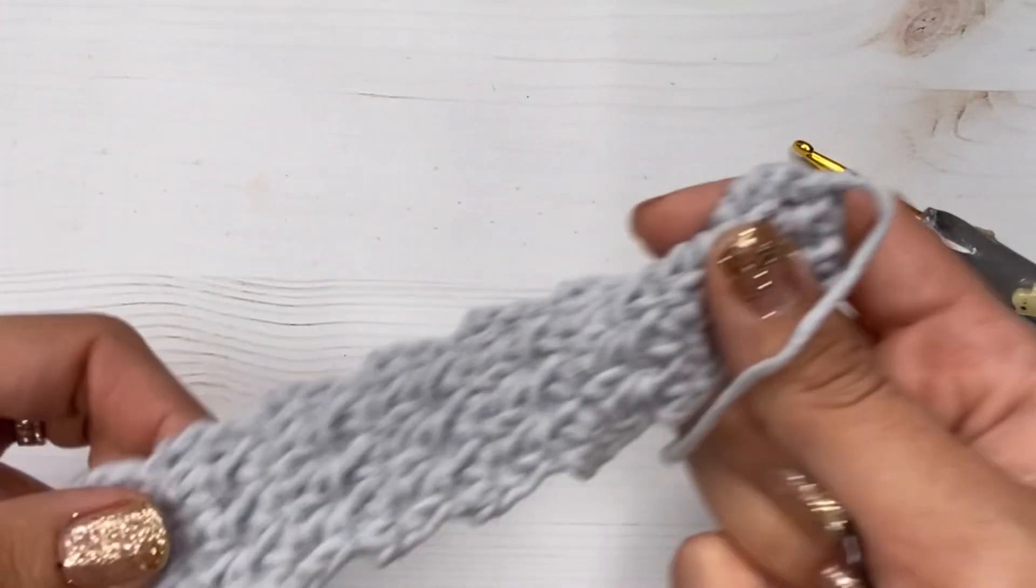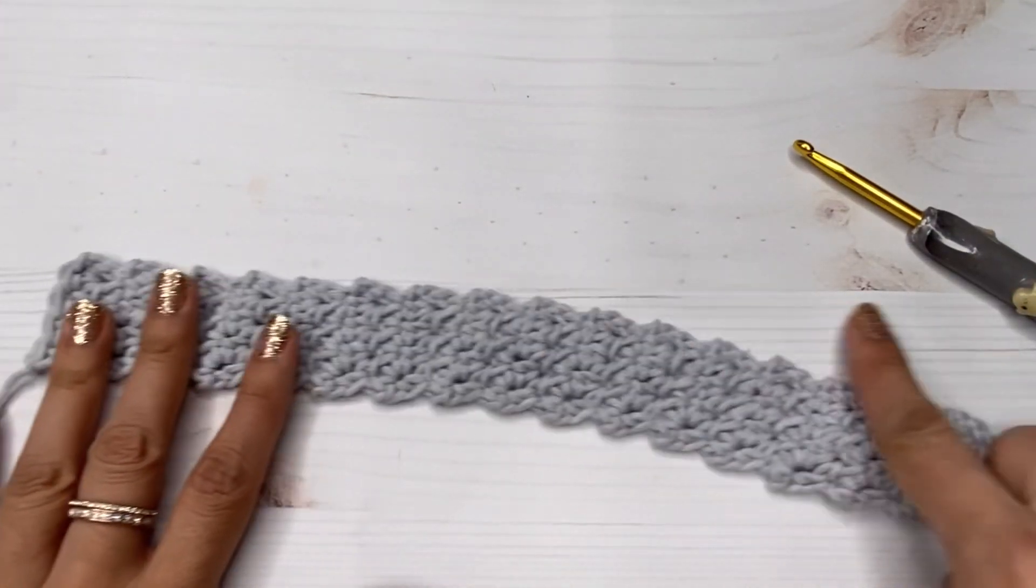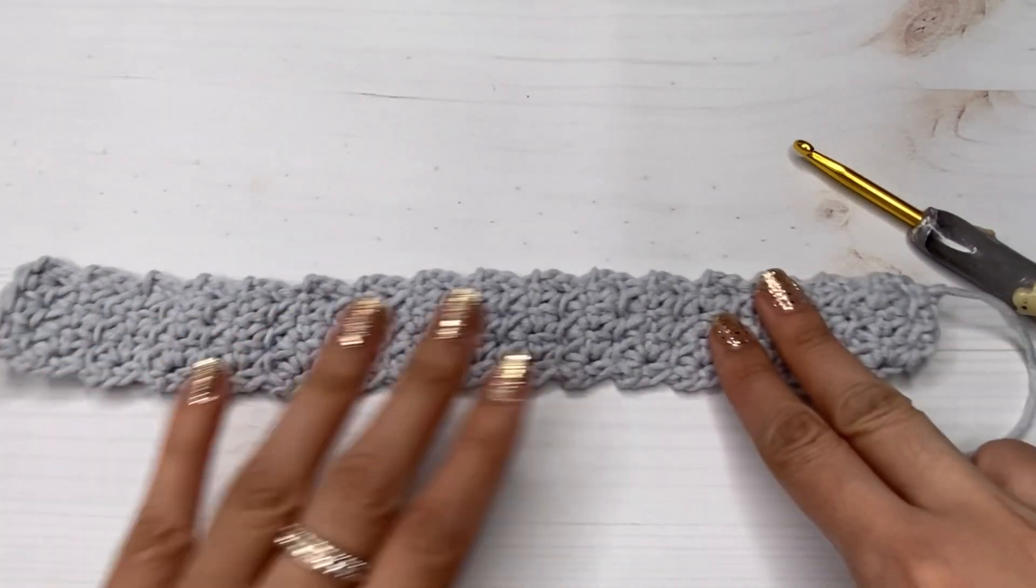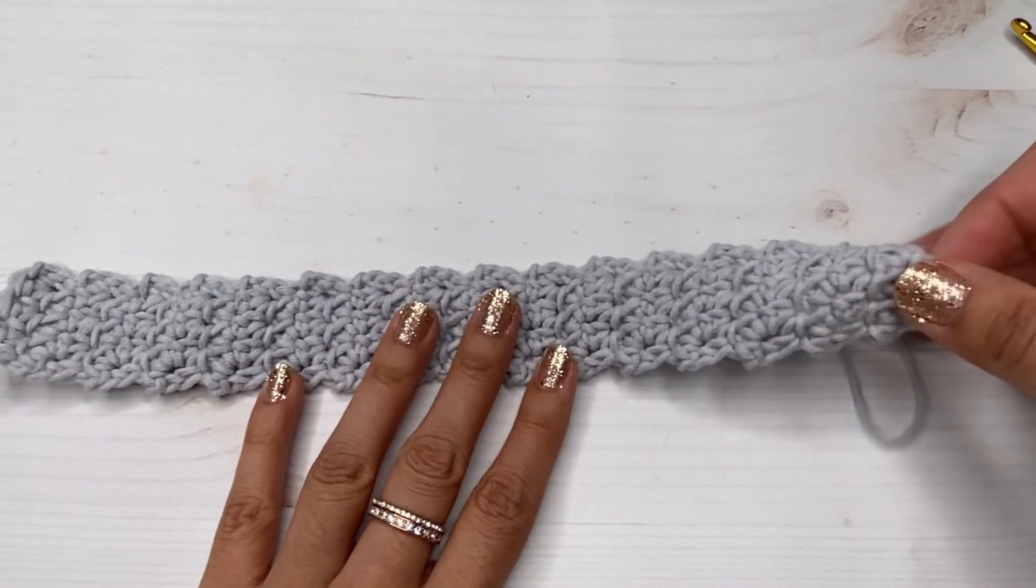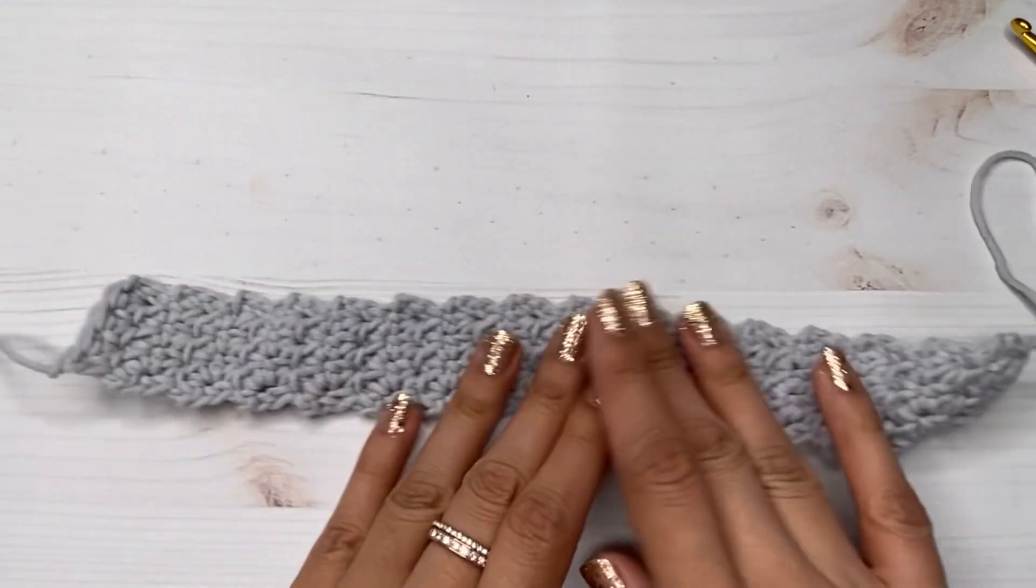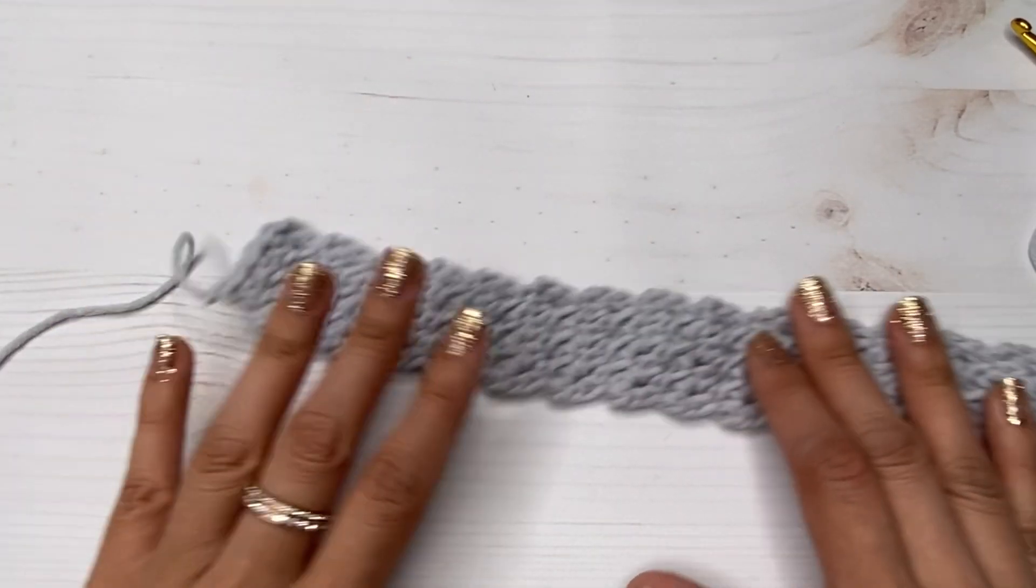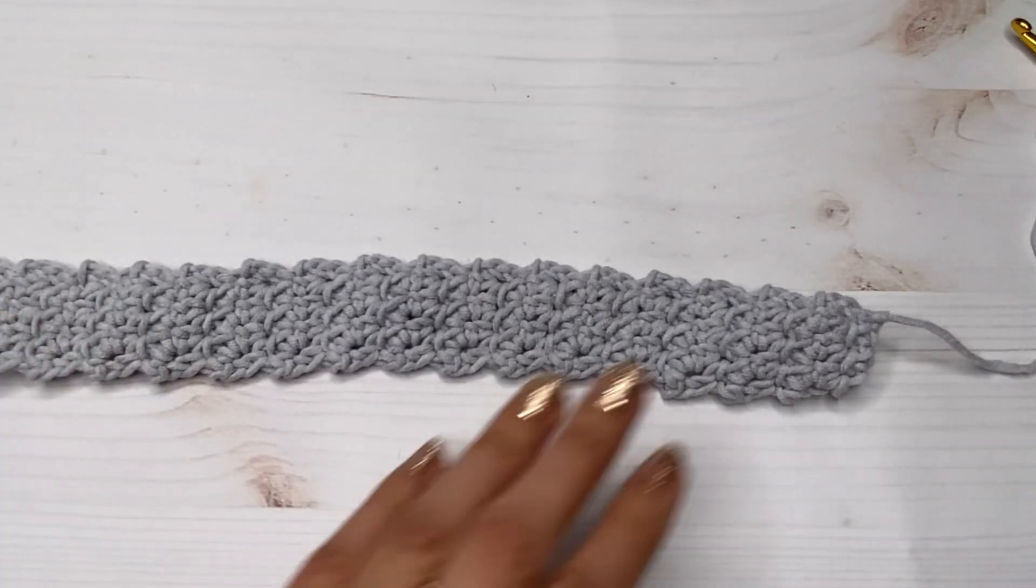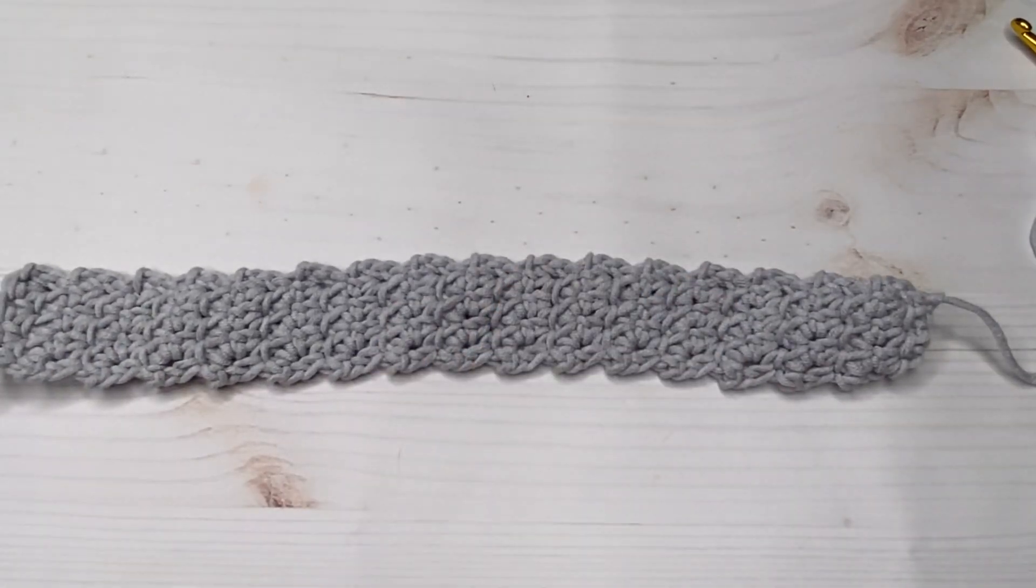Okay, so here I have my sample ready to go, and like I said, mine was about 11 inches long. And make sure to leave a long tail at the end. Obviously in the beginning you leave a tail with the slip knot, but in the end leave a long tail so you can weave it in and close your keychain.